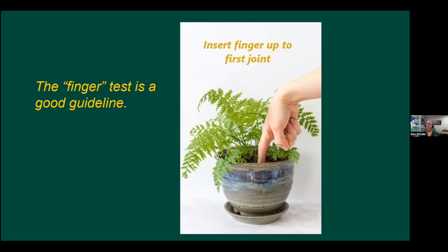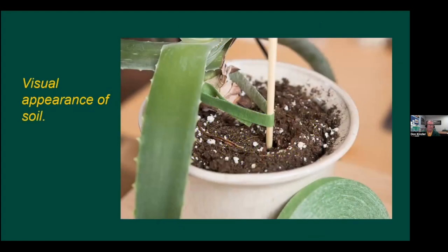If there's moisture at the fingertip, the plant probably has enough — wait a day or so. If it's dry, go ahead and water. For most plants, whenever you water, apply enough so the entire soil ball becomes wet, then discard any that drains out. Don't water on a fixed schedule — there are too many variables: heat in the room, light, pot size, plant type. Instead, check plants on a schedule; I check ours every Wednesday and Sunday. If they're dry, water; if not, wait. You can also look at the soil color — most potting mixes become lighter in color when drying out.